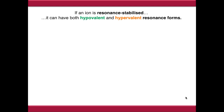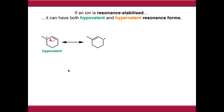If our ion is resonance stabilized - generally if it's got a pi system or a lone pair of electrons that can conjugate with it - we can have both hypovalent and hypervalent resonance forms of the same ion. In this case, we've got a hypovalent carbocation with a trivalent carbon, and we're going to resonance stabilize it using the adjacent pi system. Pushing the pi electrons across generates the resonance form, which is still trivalent - so we've moved from one hypovalent resonance form to another.